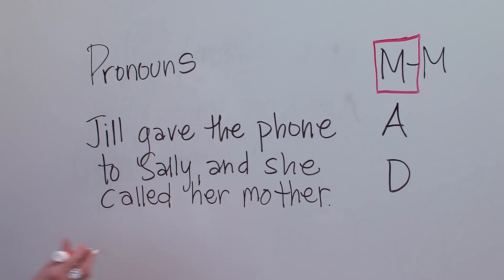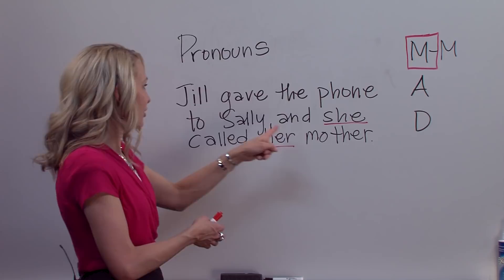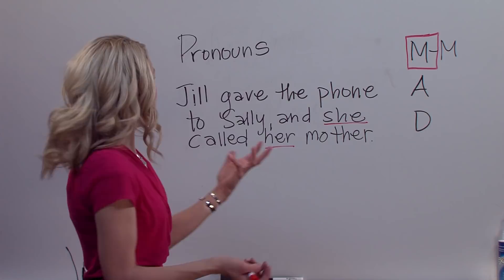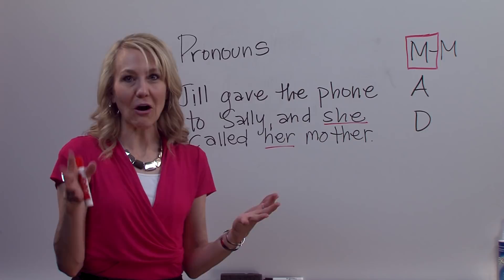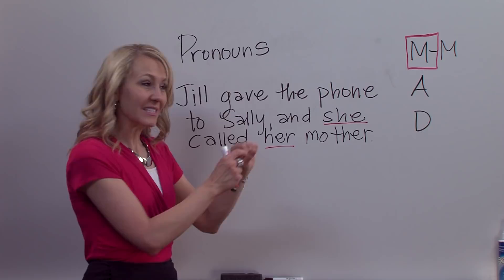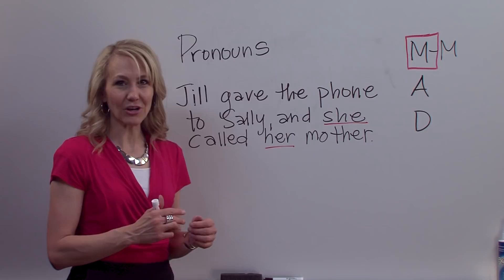Jill gave the phone to Sally and she called her mother. I'm going to underline my pronouns: she and her. The problem in this sentence is that I have a feminine pronoun but two feminine referents, and I can't tell if she is referring to Sally or to Jill. Did Jill call Sally's mother, or did Sally call Jill's mother, or did Jill call her own mother? We're just not sure who called whom. If I were to see this sentence on an exam or in a paper, I'd need to rewrite it to clarify and have a clear modifier relationship.